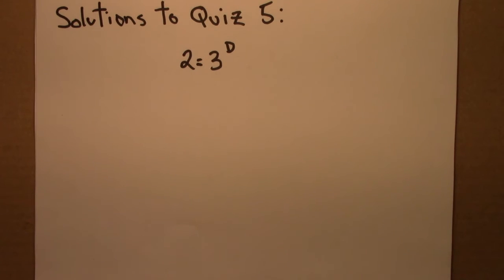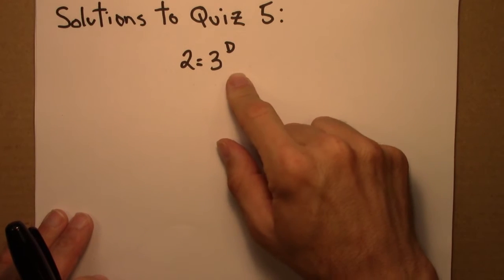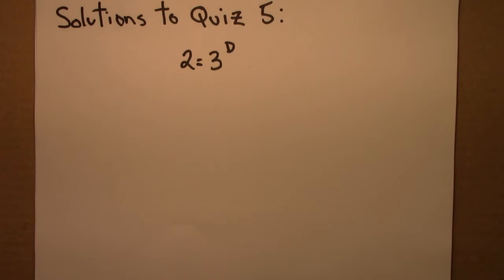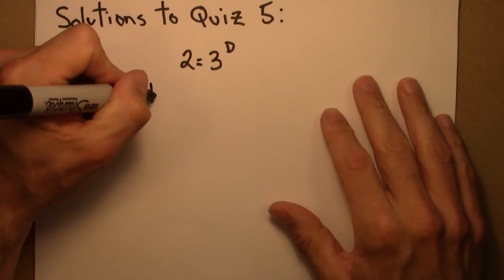The first question in quiz 5 asked us to solve this equation for d. To do so, we'll take the logarithm of both sides.